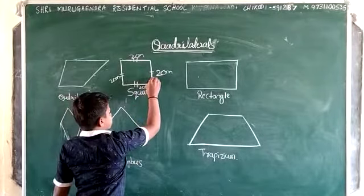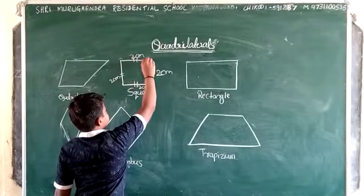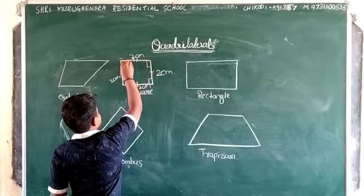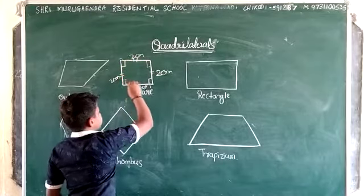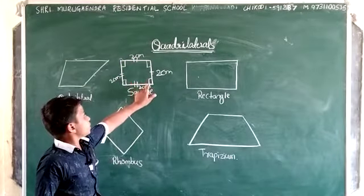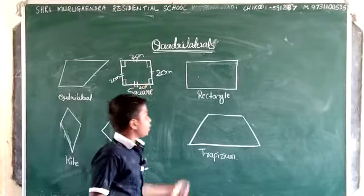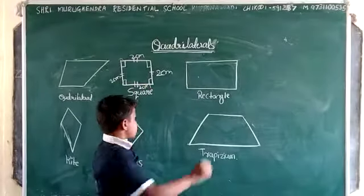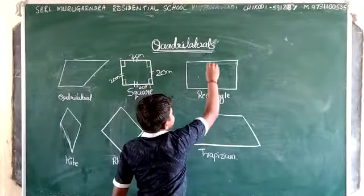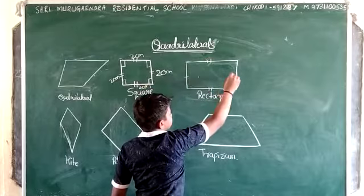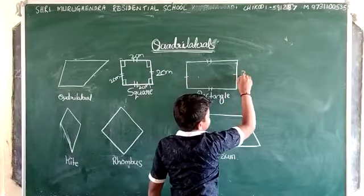Today we are going to discuss quadrilaterals. Quadrilateral means a four-sided closed figure. It has four sides and four angles. The sum of interior four angles should be 360 degrees. There are some types of figures in quadrilaterals. Let us discuss about them.